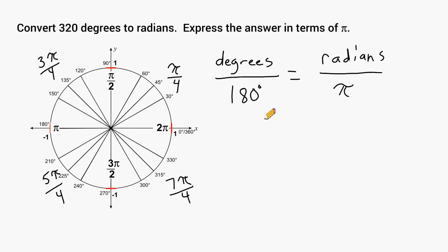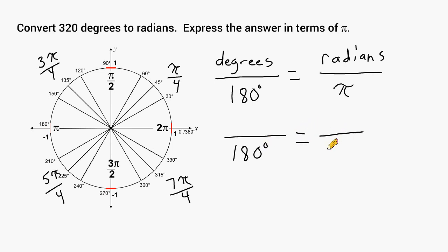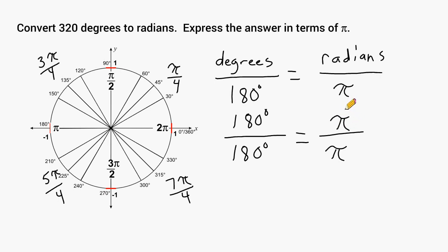For example, to convert 180 degrees to radians, you take the proportion — the denominator is always 180 degrees on the left and pi on the right. Because the top is the same as the bottom on the left side, the top must equal the bottom on the right side. So our answer is just one pi, or simply pi.